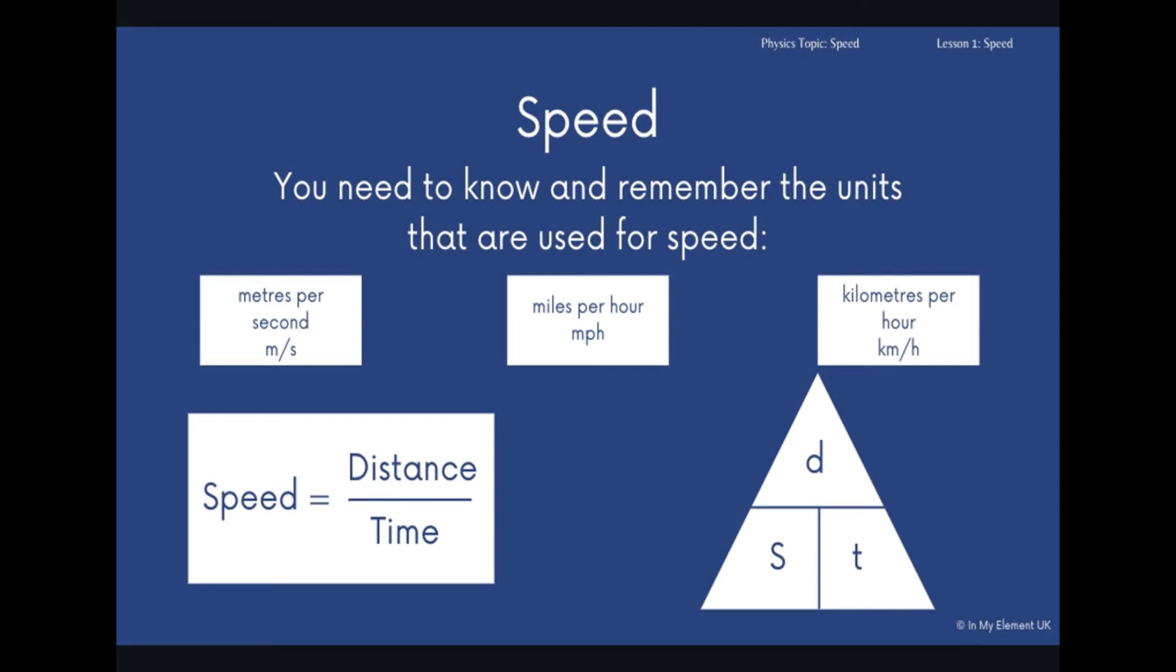The other one there is kilometers per hour. That means that the distance must be recorded in kilometers, and the time must be recorded in hours.